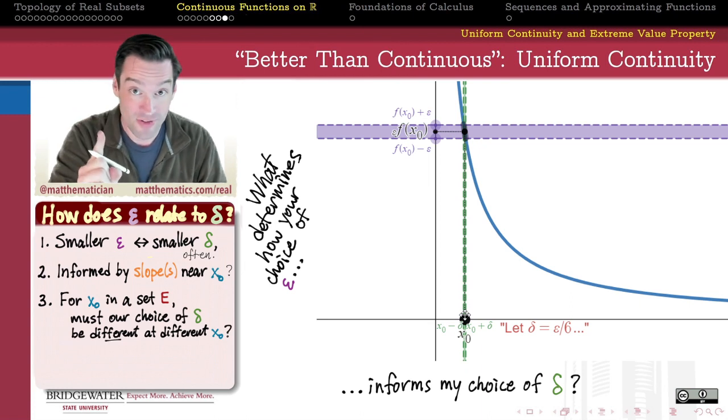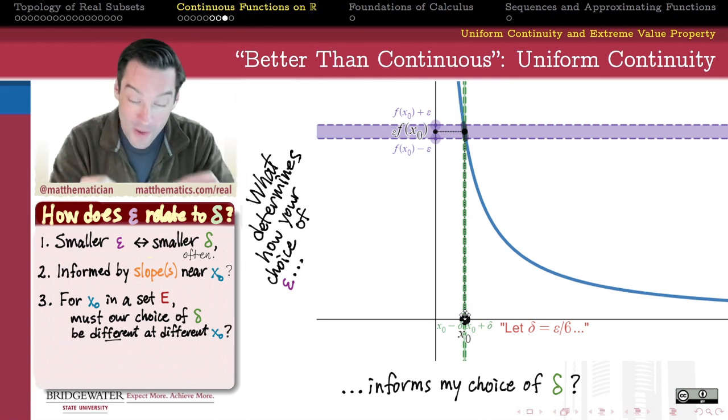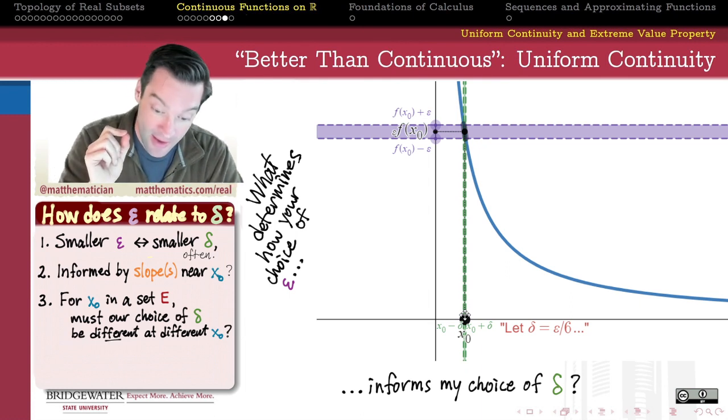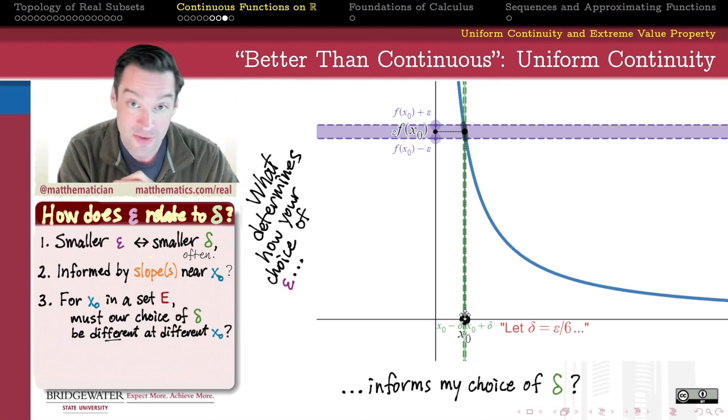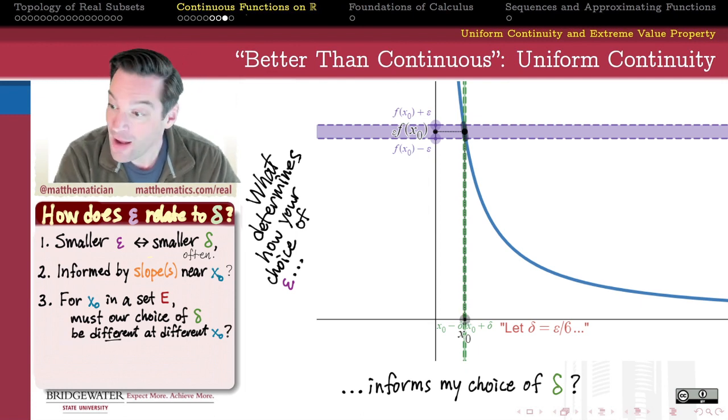And so even though this function is continuous, you need to tell me both epsilon and the point x0 in order for me to tell you what delta is going to work such that the x values that are delta close to x0 are going to have y values that are epsilon close to f of x0.